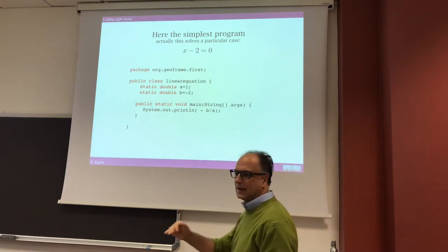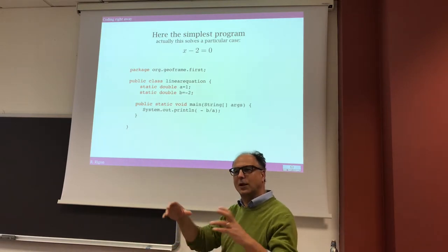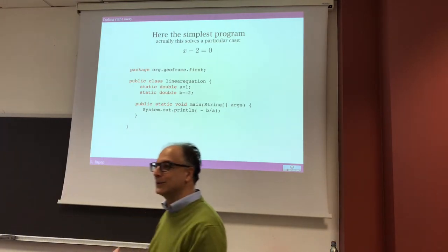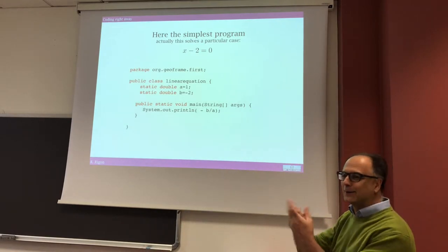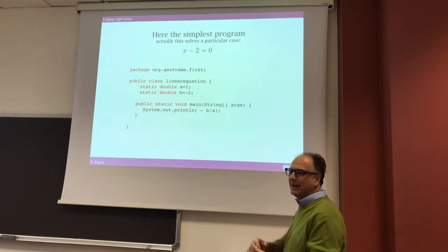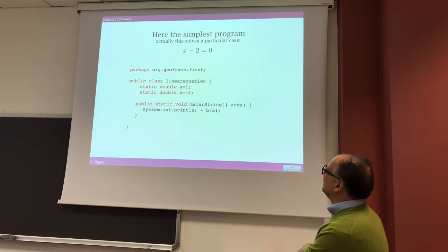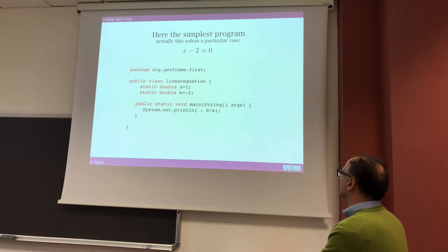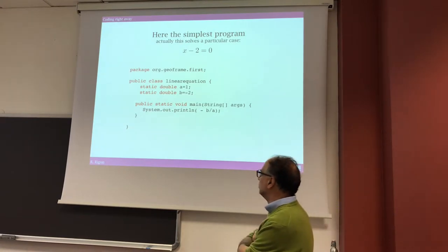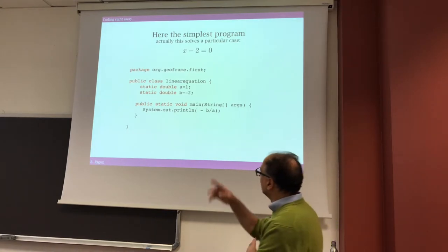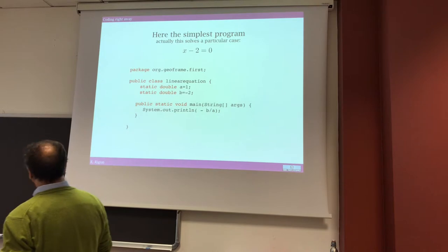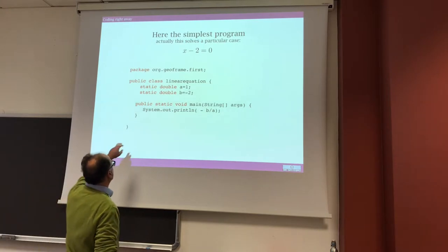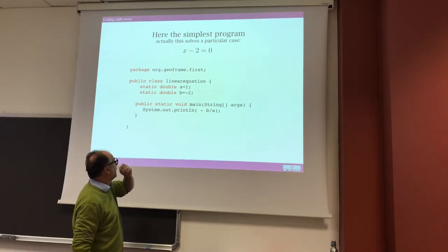You have to stop somewhere, because you can't write the most general program in the world — whose answer is 42, as in science fiction. So for instance with x - 2 = 0, meaning a = 1 and b = -2, we create a class called LinearEquation with two fields declared statically: a = 1 and b = -2.